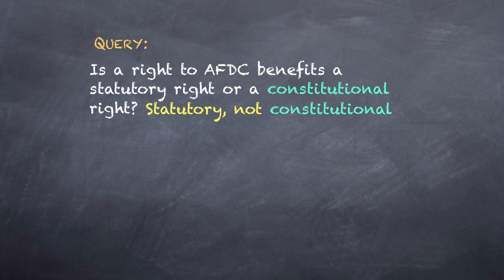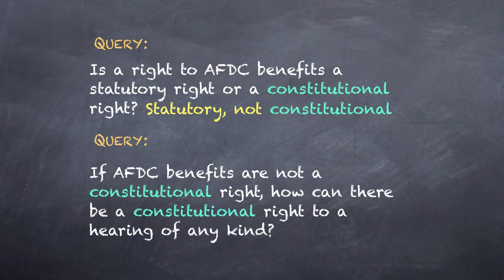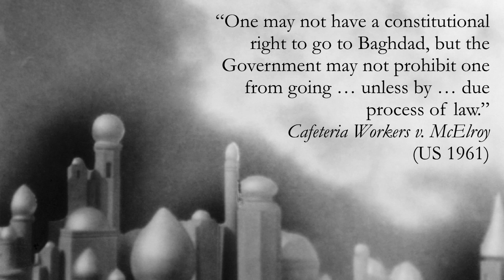AFDC was a program Congress had chosen to enact. But this raises another question: if AFDC benefits are not a constitutional right, how can there be a constitutional right to a hearing of any kind? The answer is that the Due Process Guarantee stands on its own legs, apart from the nature of the substantive entitlement at issue. The Supreme Court put the point colorfully in Cafeteria Workers v. McElroy: 'One may not have a constitutional right to go to Baghdad, but the government may not prohibit one from going unless by due process of law.' In Goldberg, the state of New York did not contend that procedural due process is not applicable to the termination of welfare benefits.